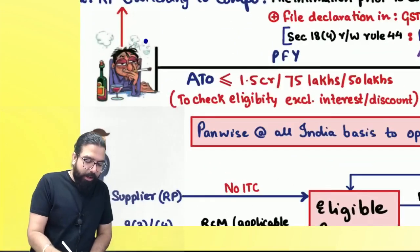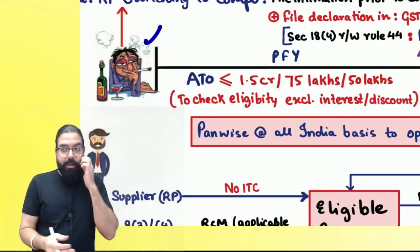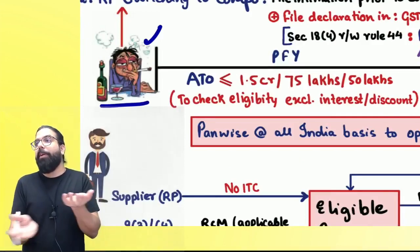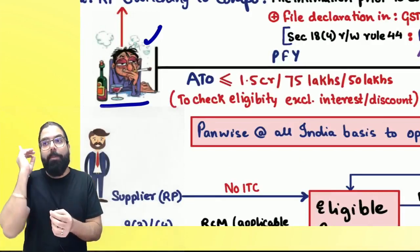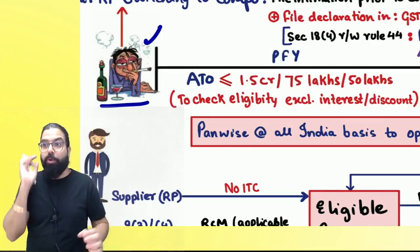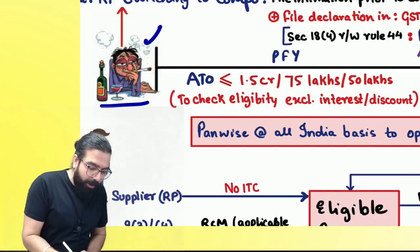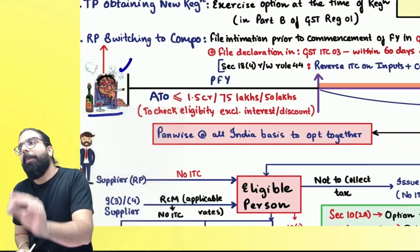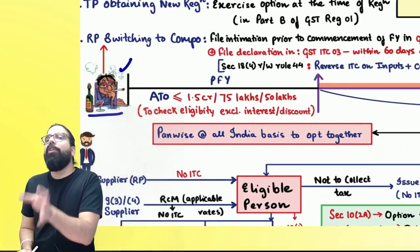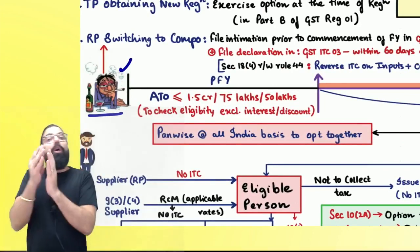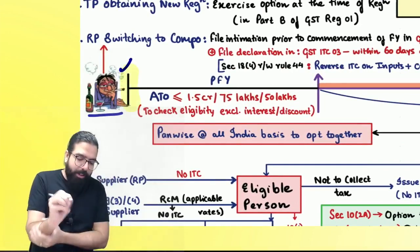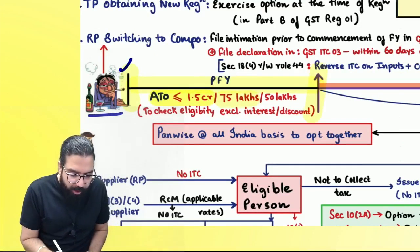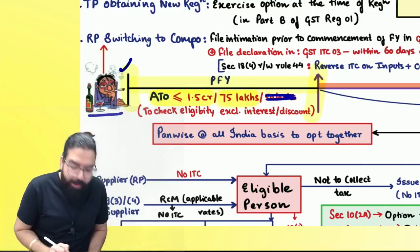Because of GST, this person's situation was: take output, set off input, then pay the remaining to the government — too much headache. The government said, 'Don't worry, we'll give you a simple scheme' — but only to people who are small. According to the government, 'small' means whose aggregate turnover in the preceding financial year is up to 1.5 crore or 75 lakh.